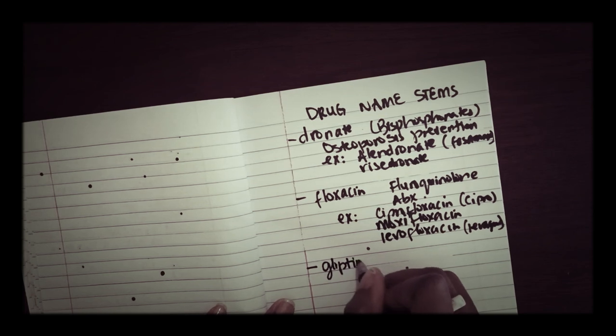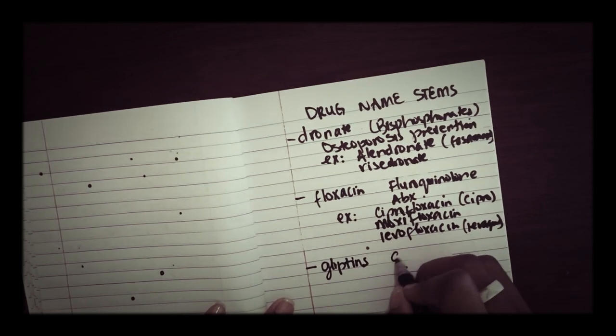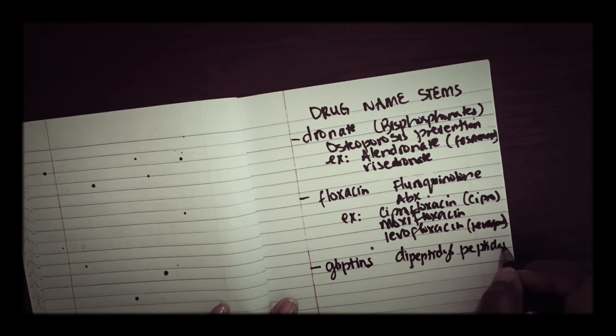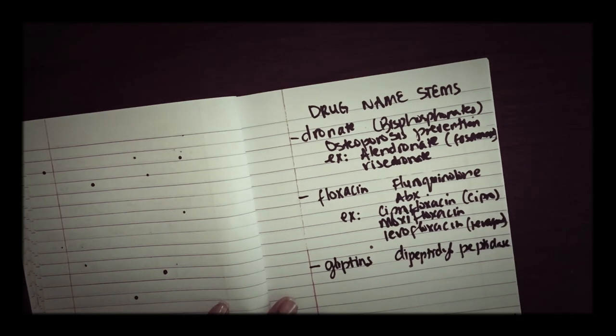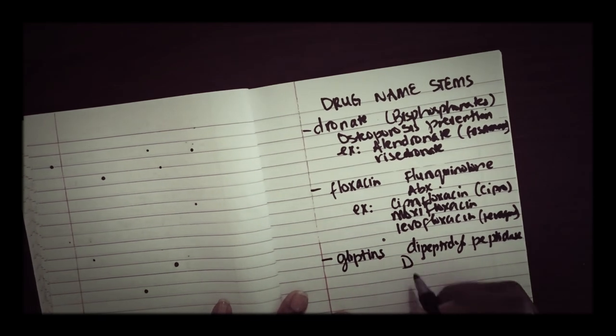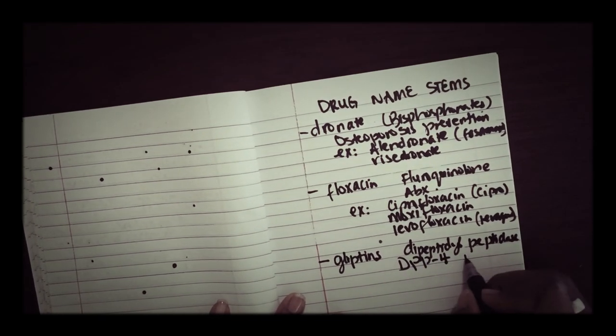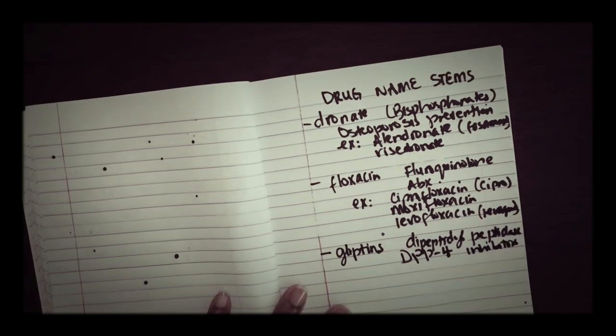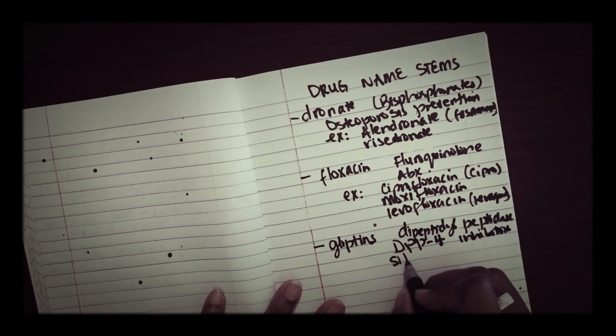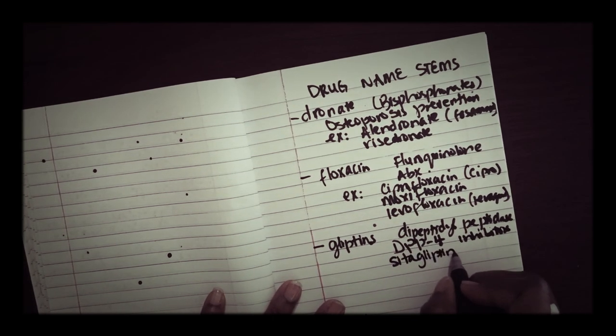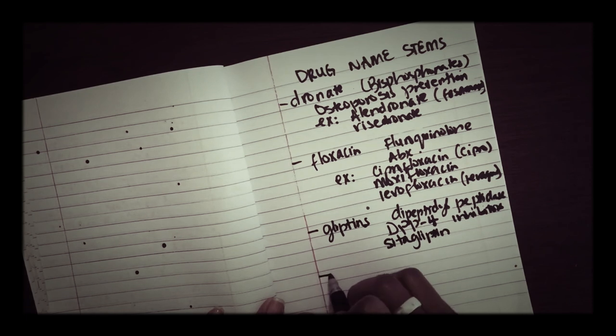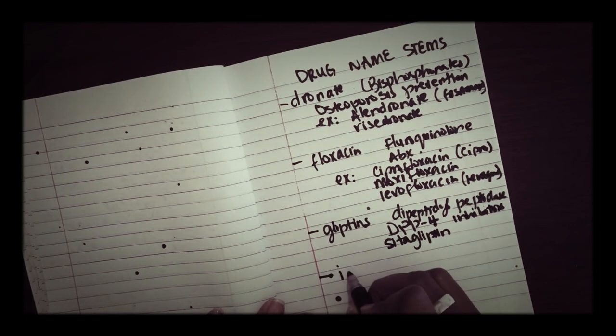And then you have your -gliptins. These are your dipeptidyl peptidase. This is your type 2 diabetic drugs and we call them DPP-4 inhibitors. Example is your Januvia, sitagliptin.